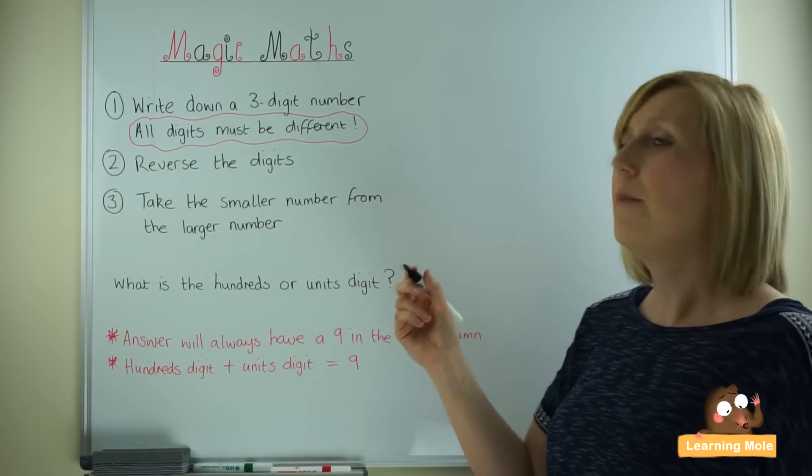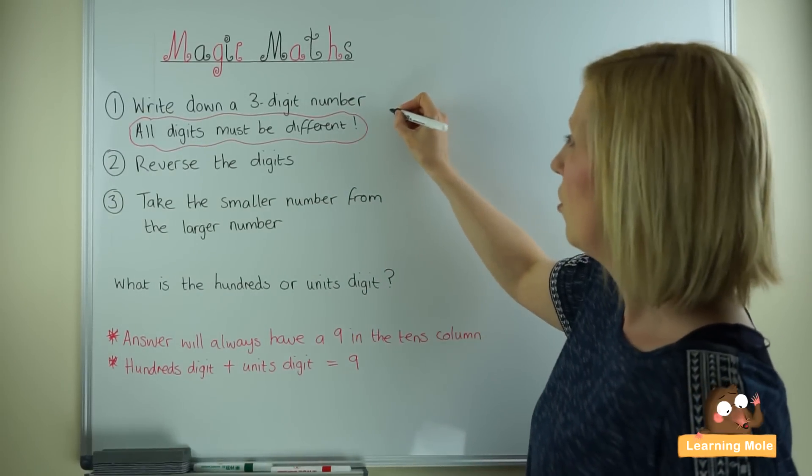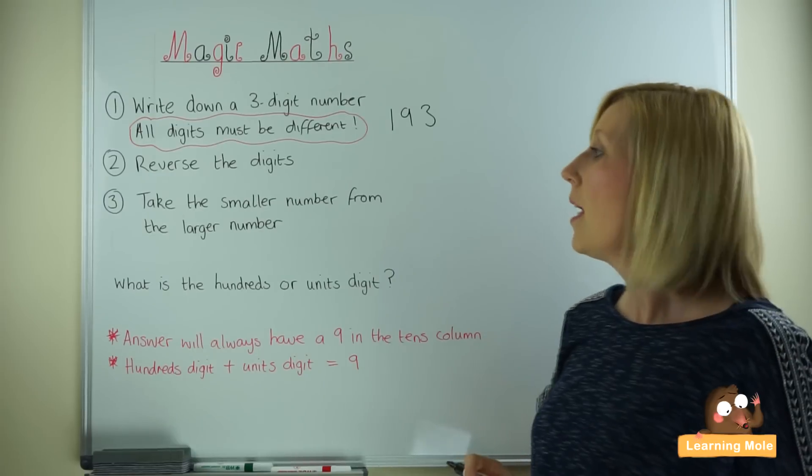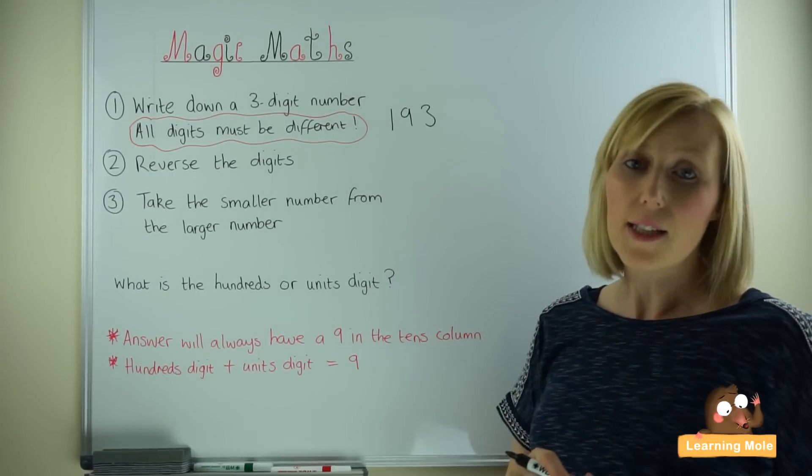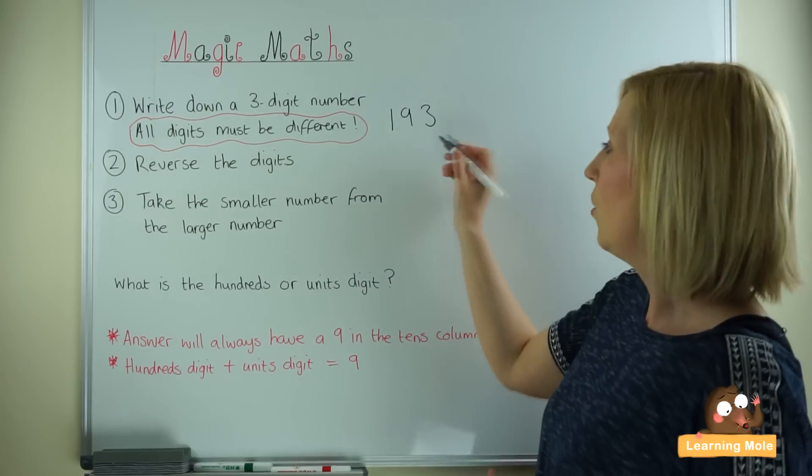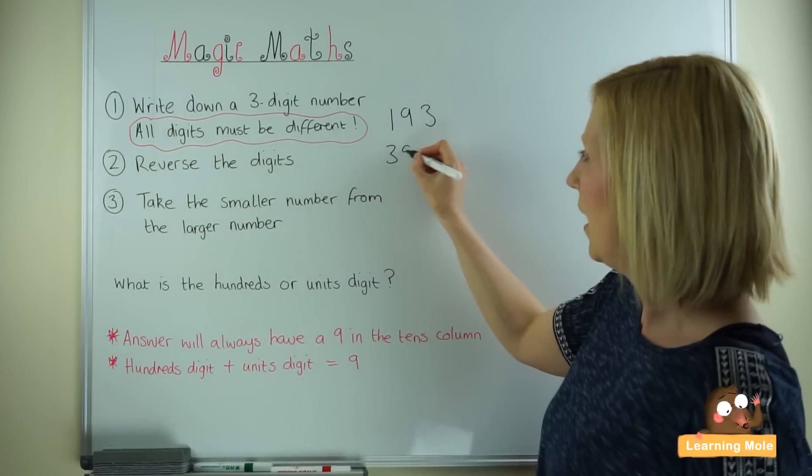So think about a number, any number you like. I'm going to choose 193. Now you ask the person to reverse those digits. So reverse, 391.